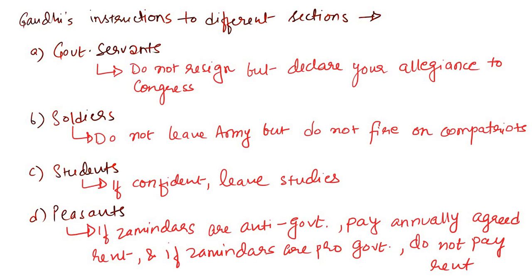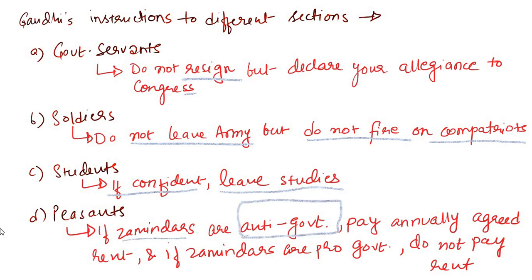There were special instructions issued by Gandhiji at the Gowalia Tank meeting, directed at various sections of society. To government servants: do not resign, but declare allegiance to the Congress. To soldiers: do not leave the army, but do not fire on compatriots. To students: if confident, only then leave your studies and participate. To peasants: if zamindars are anti-government, pay the agreed rent; if pro-government, do not pay. Gandhiji followed up with the famous exhortation: 'Do or Die — we shall either free India or die in the attempt; we shall not live to see the perpetuation of our slavery.'